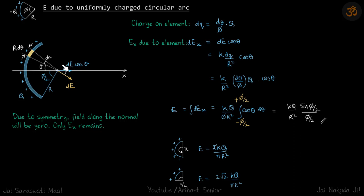it will have a dE like this, so vertical components will get cancelled out. Due to symmetry, field along the normal will be zero, only Ex remains. Only field in the x direction remains.